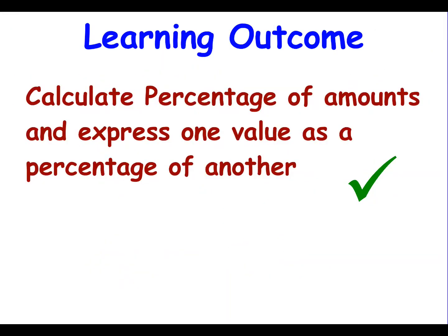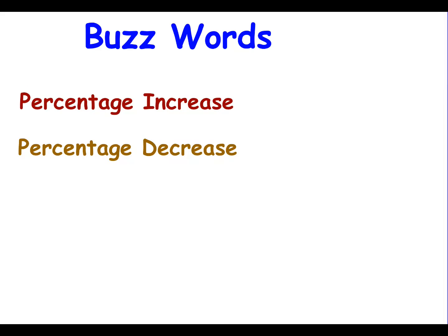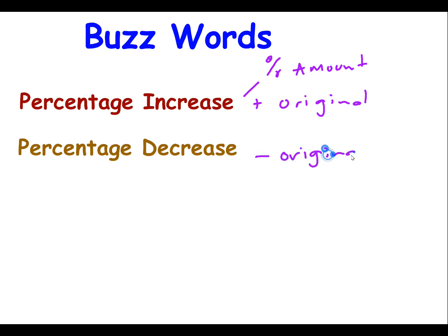That completes our learning outcome for this lesson, where we've learned how to calculate percentage of amounts and express one value as a percentage of another, using both manual and calculator methods. Key buzzwords: to do a percentage increase, add the percentage amount to the original; for a percentage decrease, subtract it from the original. For more practice, please go to Moodle or get worksheets from your tutor.